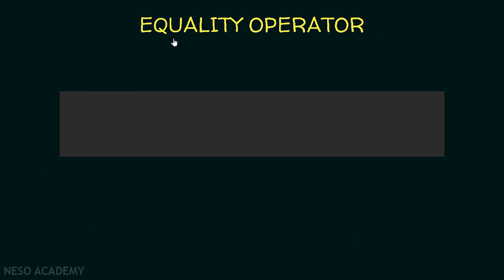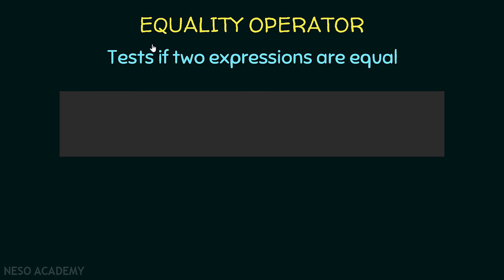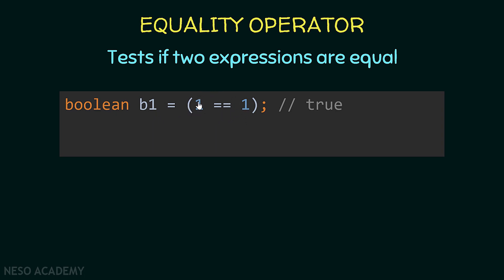Now let's see some examples starting with the equality operator, which is used to test if two expressions are equal. I'm initializing a boolean variable called b1 to be equal to (1 == 1). I am comparing this value with this value using the equality operator. Of course one is equal to one, so this expression evaluates to true and true will be stored inside b1.